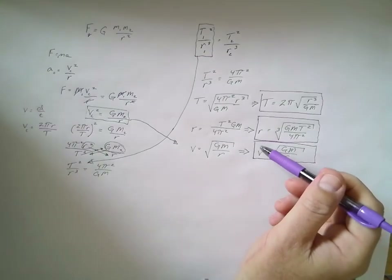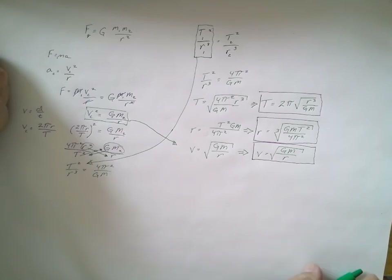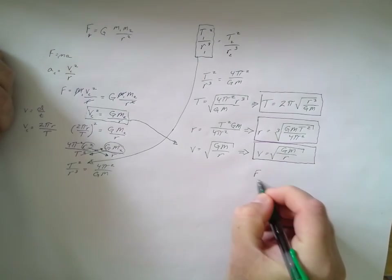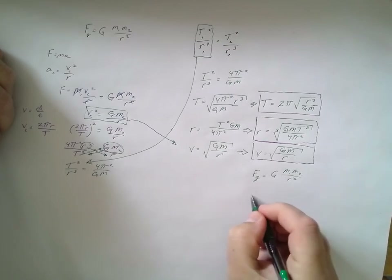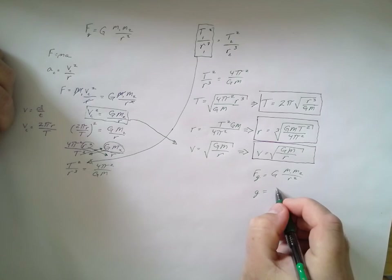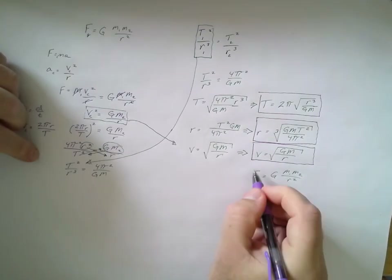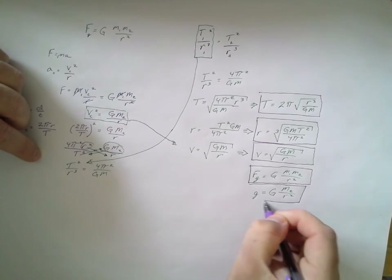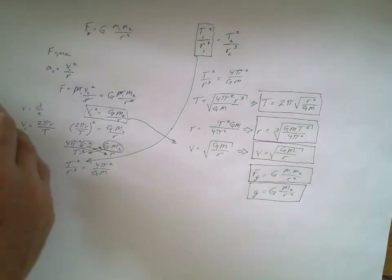In addition to these three, you'll also need the Universal Law of Gravitation equations from the previous video: force due to gravity equals G m1 m2 over r squared, and the acceleration due to gravity equals G m2 over r squared. Make sure all of these are written on the back of your equation sheet.